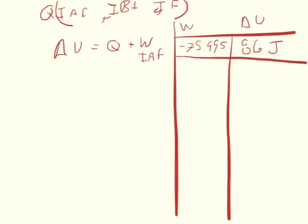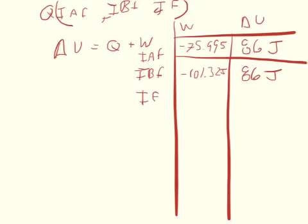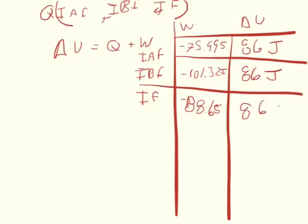Setting up a table: for IAF, work = negative 75.995 joules and ΔU = 86 joules. For IBF, work = negative 101.325 joules and ΔU = 86 joules. For IF, work = negative 88.659 joules and ΔU = 86 joules. The change in internal energy is 86 joules in each case as stated in the problem — it gives us the final and initial internal energy values.